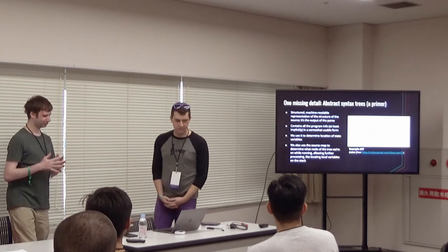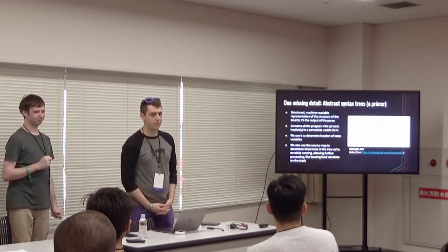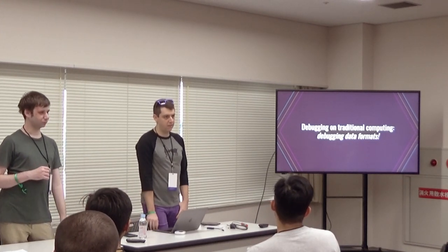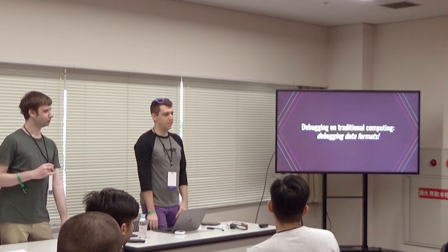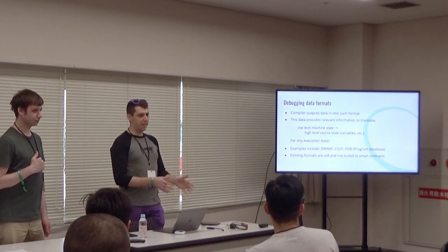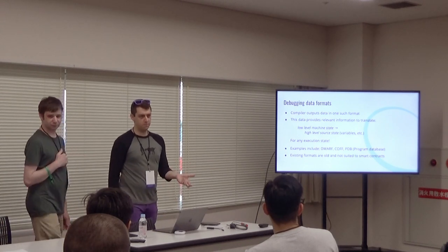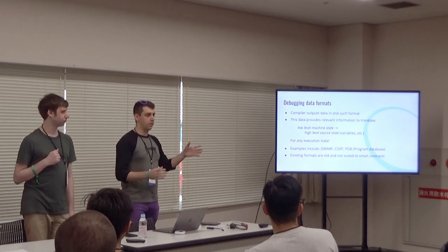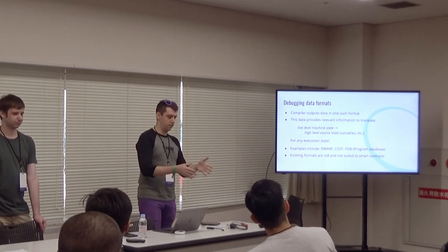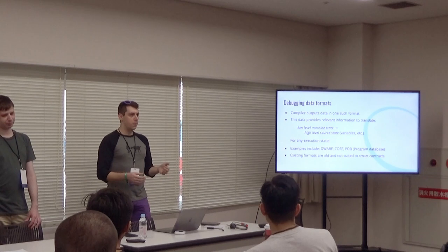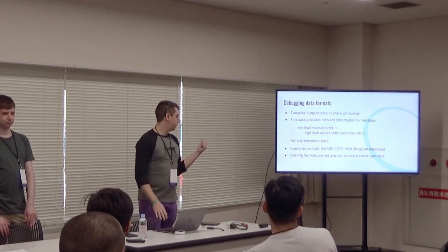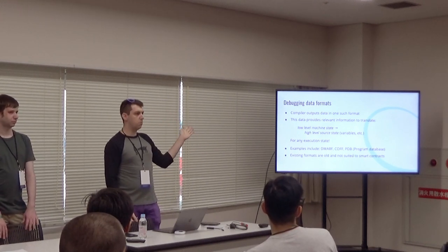How does it work on other platforms? Like if you file a C program, how can you debug that? Well, there's this concept called a debugging data format which comes from the compiler. The compiler provides information about a particular program — given any machine state, here's how you can get the high-level source code state. So if you have a bunch of bytes, a stack, memory, storage — here's how you can get variables out of that. This is extremely useful. DWARF is probably the most popular.